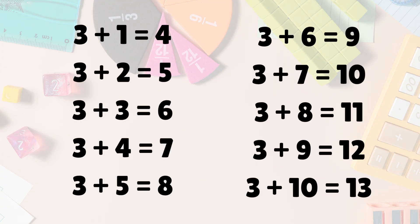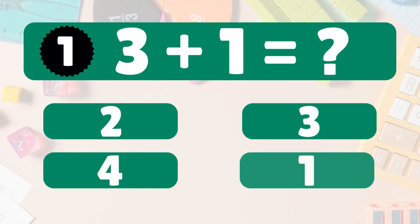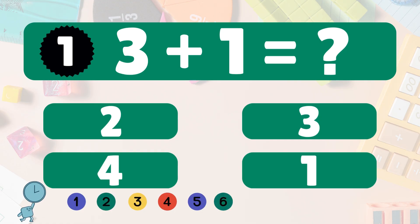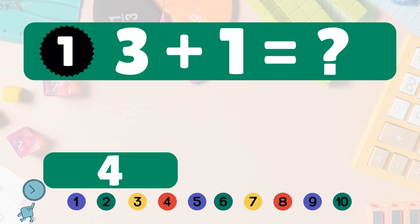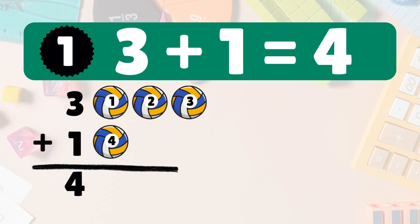Addition table of three, one by one. Three plus one equals what? Think, and choose the correct answer. Three plus one equals four.